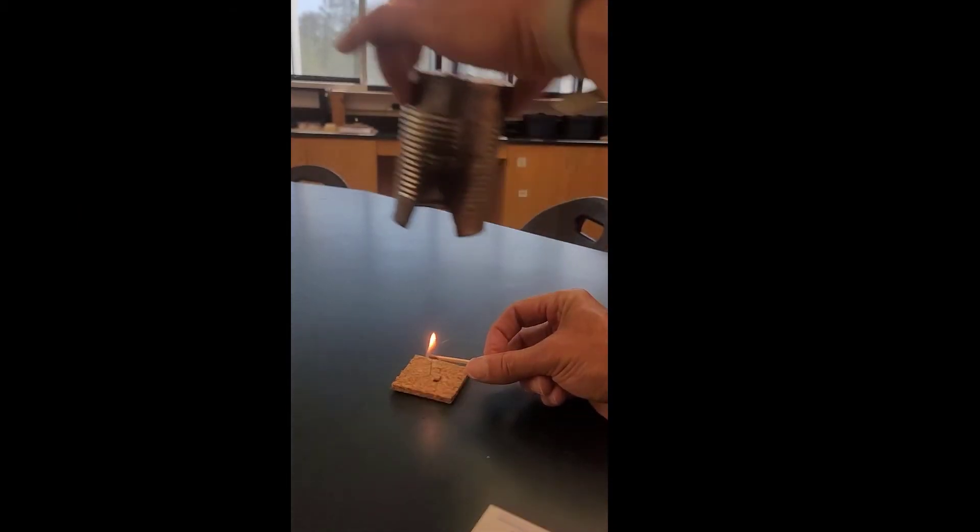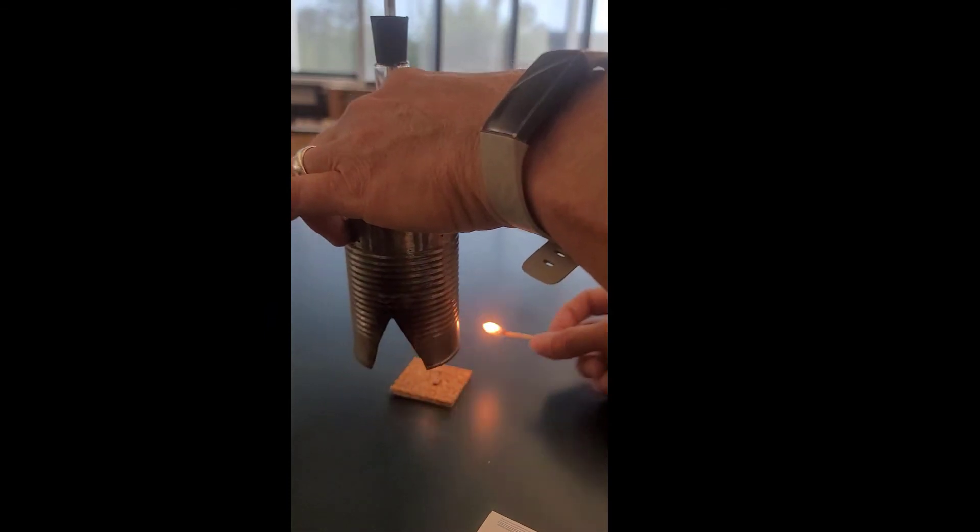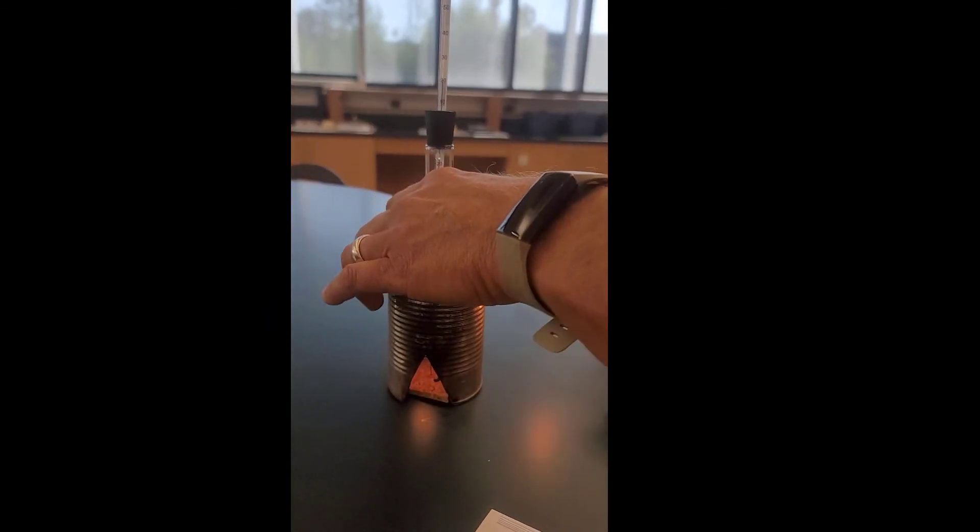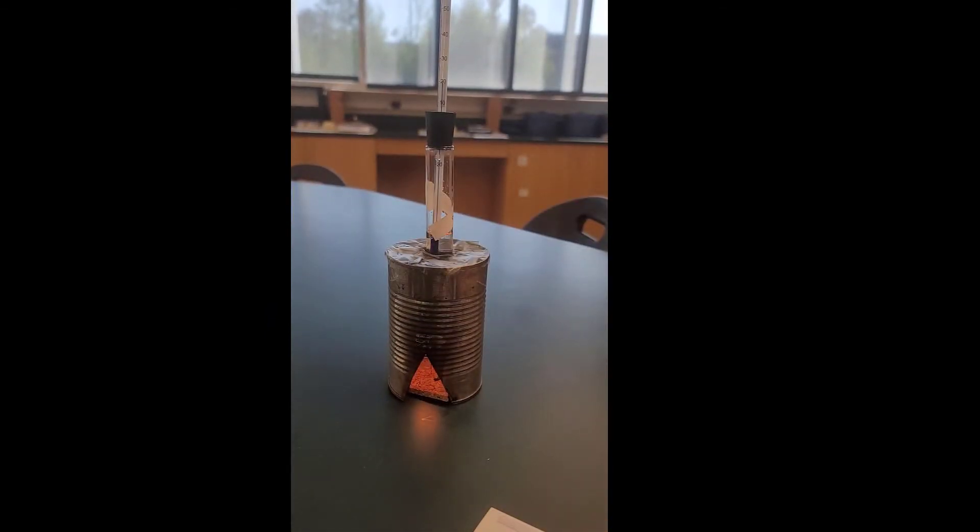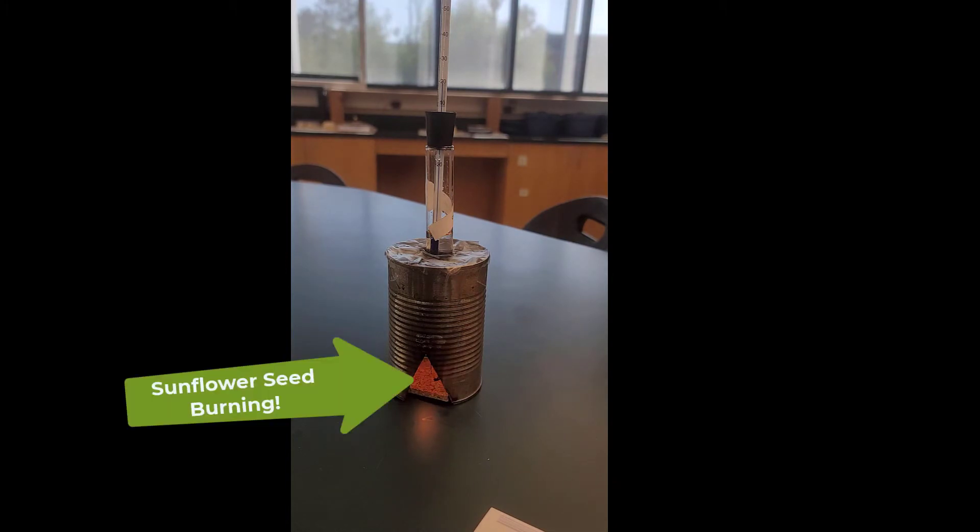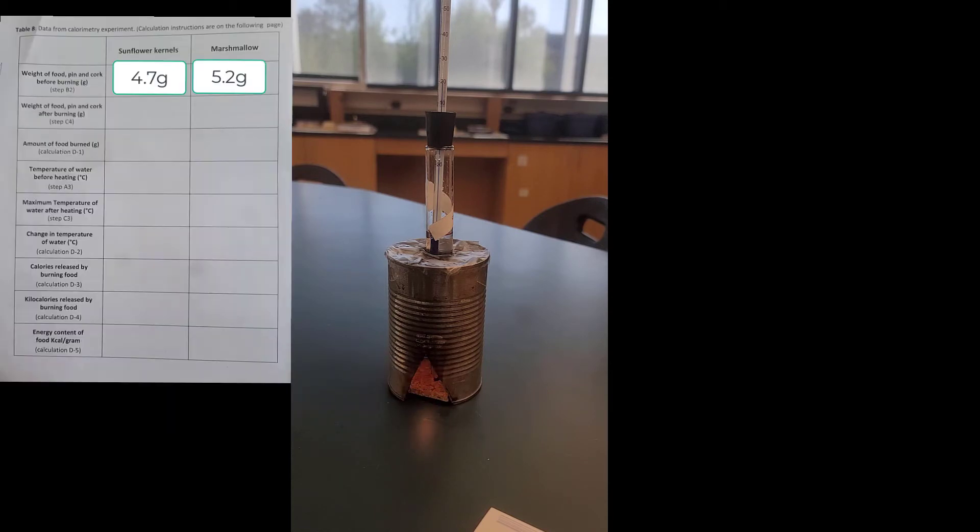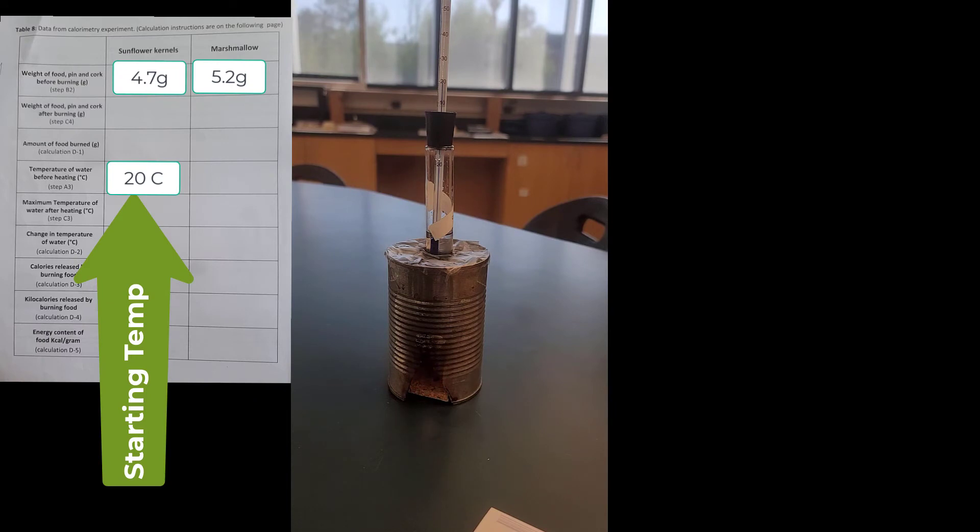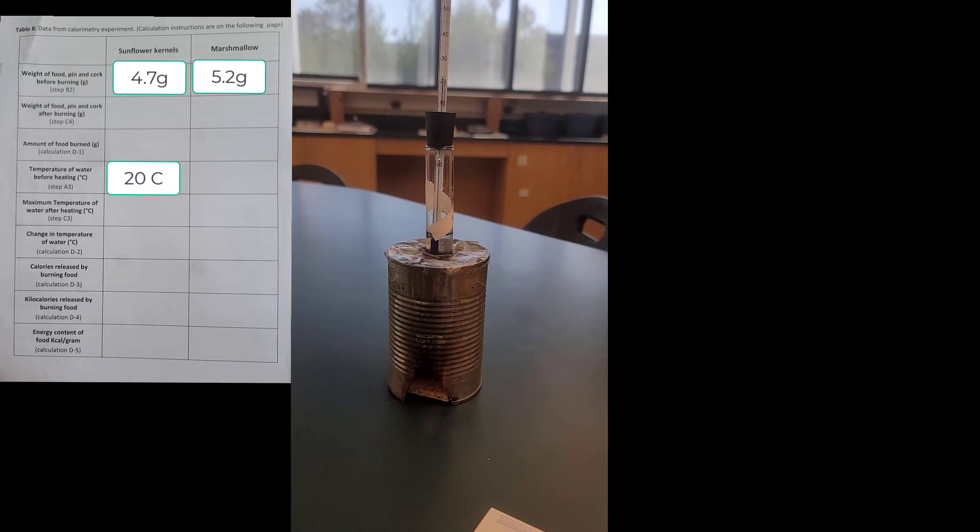Then I wait. What we're looking for is measuring how high our temperature goes. As we burn the food, you can see the flame burning right there. It's burning some of the calories that are inside the sunflower seed. As it does that, it releases some of the energy. We lose some of the energy as heat, but at least a good amount of that energy goes to raising the temperature of the water.